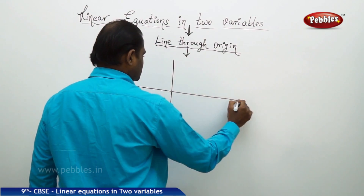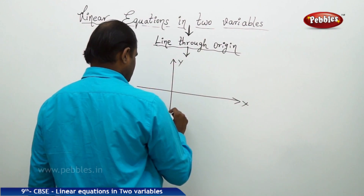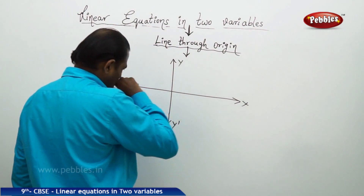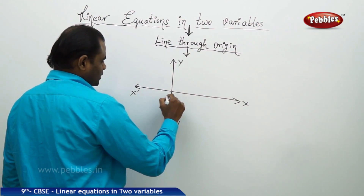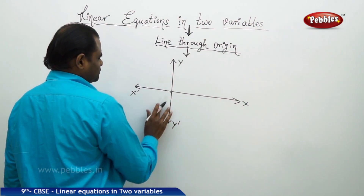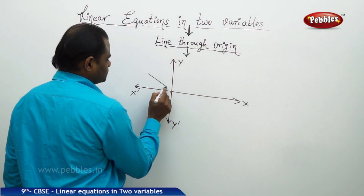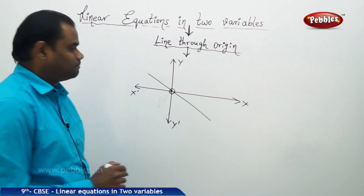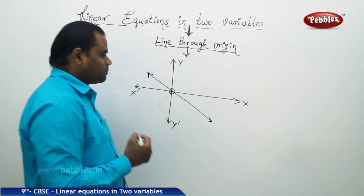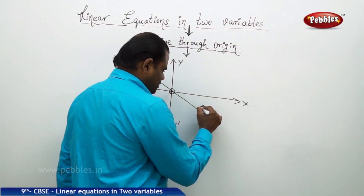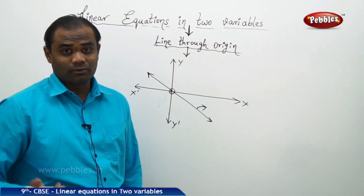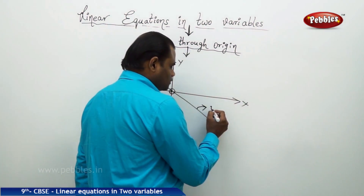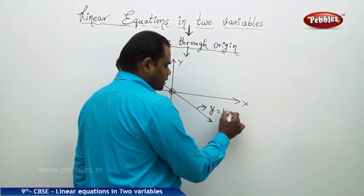For example, I have the x-axis and y-axis. I wanted to identify a line which passes through origin. When a line passes through origin, what would be its equation? How does the linear equation look like? In this case, a linear equation would be in the form y equals kx.